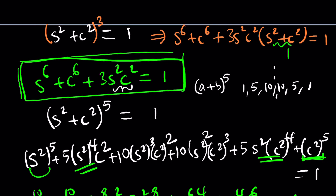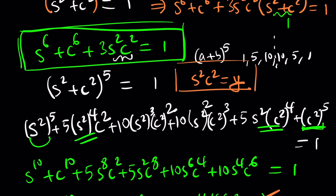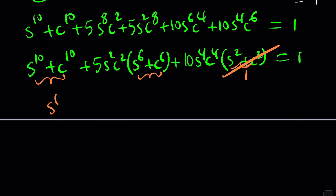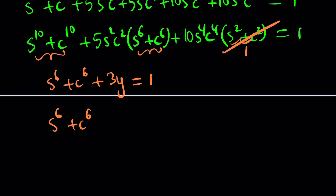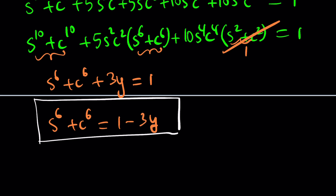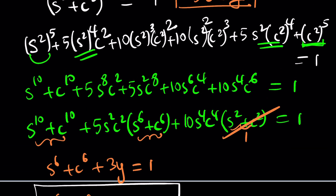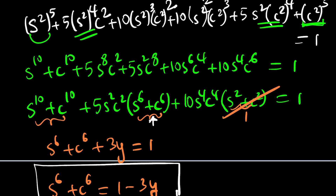Let's name s squared c squared as y. Then from the cubic identity: s to the sixth plus c to the sixth plus 3y equals 1, so s to the sixth plus c to the sixth equals 1 minus 3y. My goal is to turn everything into y. Substituting back, the term with s⁶+c⁶ becomes 1 minus 3y, and we know the sum of tenth powers is 11 over 36.